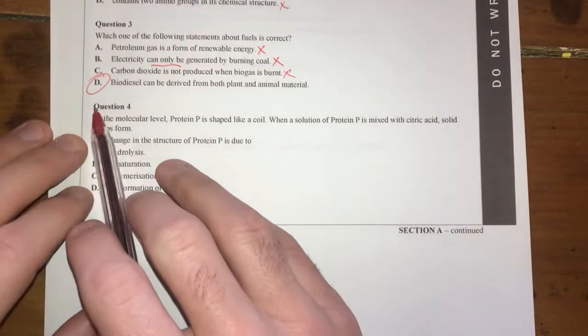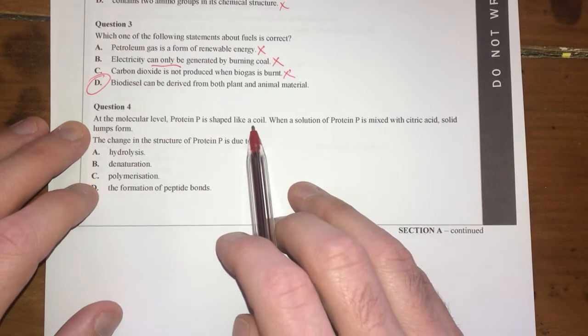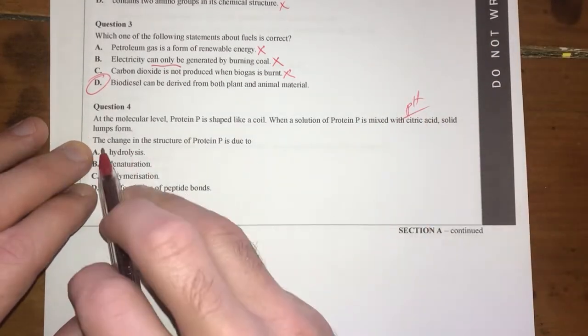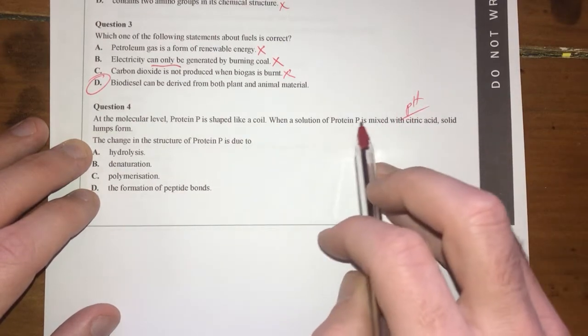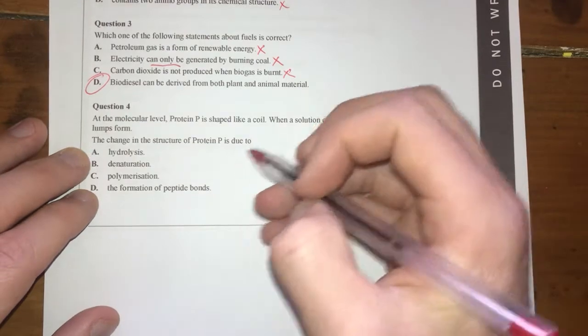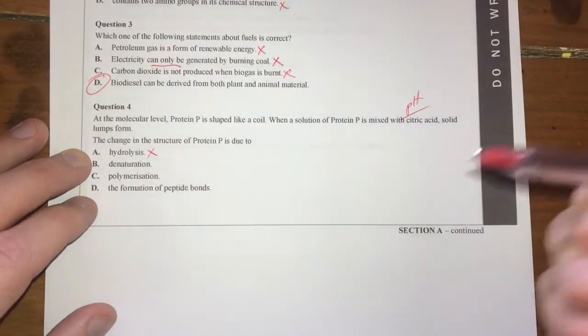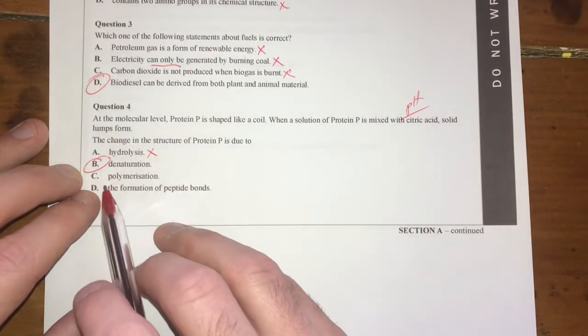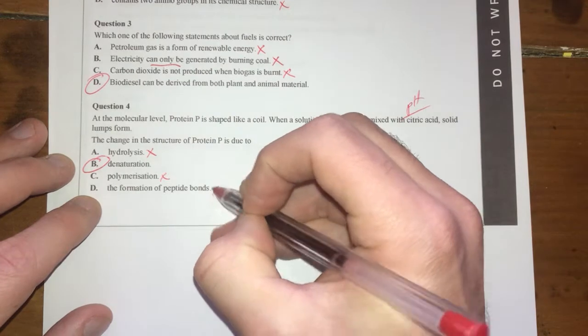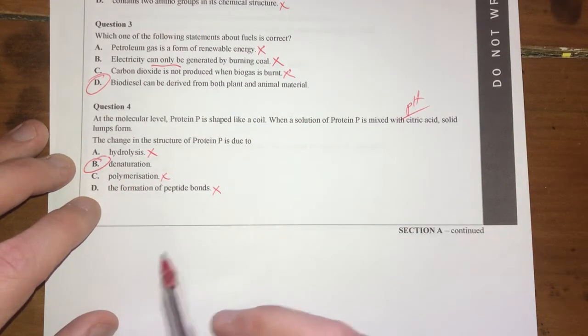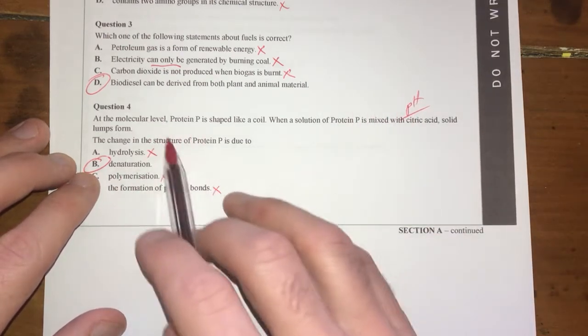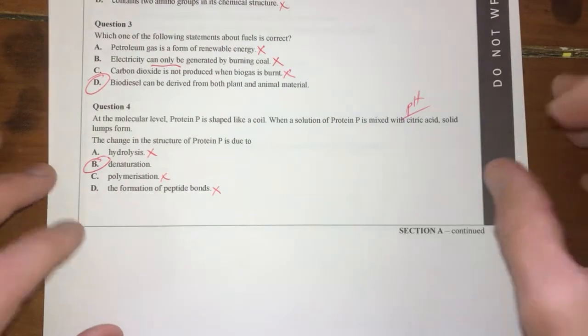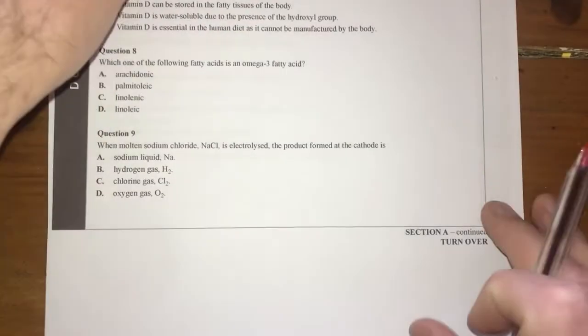Question four: at the molecular level, protein P is shaped like a coil. When a solution of protein P is mixed with citric acid, a solid lump forms. The change in structure of protein P is due to what? If you're changing the pH and changing the shape of the protein, it's denaturation. Hydrolysis is not true because that would be breaking down the primary structure. Denaturation is our answer by definition—when you're changing the pH and changing the shape of the protein, it's denaturation. Polymerization and formation of peptide bonds are not right. Hydrolysis is where you're breaking down and metabolizing, digesting the protein.